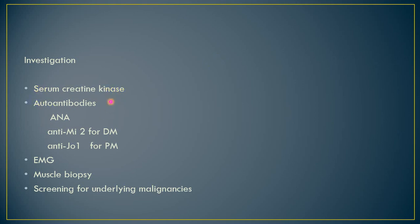For more sophisticated investigations, we check autoantibodies. Anti-nuclear antibody is positive in about 60% of patients, making it a sensitive but non-specific marker, as it occurs in many diseases like SLE and systemic sclerosis. More specific antibodies include anti-Mi-2, which is specific for dermatomyositis, while anti-Jo-1 is more specific for polymyositis. When anti-Jo-1 is positive, the patient has a high likelihood of developing interstitial lung disease, so it serves as a marker for future development of that complication.